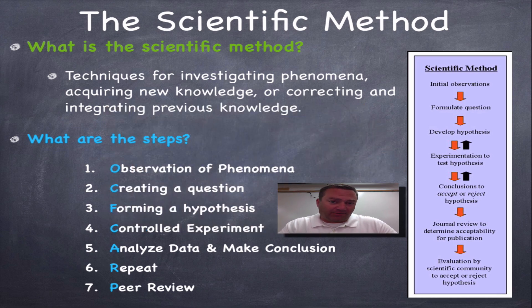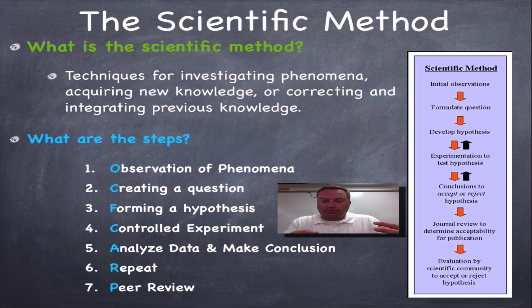Now, the scientific method is a series of steps and techniques that's used to discover new knowledge, correcting old knowledge, and also as a way to integrate previous knowledge so it all fits in one nice little neat package. So what are the steps to the scientific method? As you can see down here, there's seven steps to them.